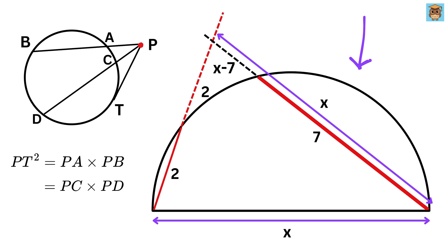In this semicircle, we get this length, or 2 times this length, or 2 plus 2, or 4 equals this length, or X minus 7 times this length, or X.